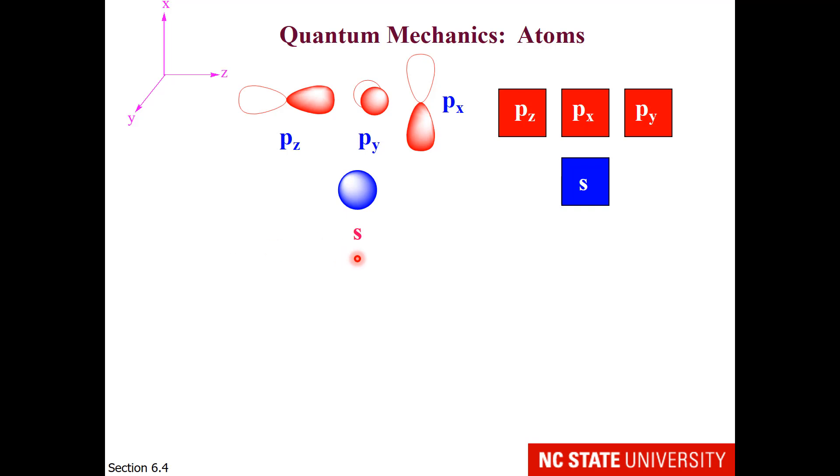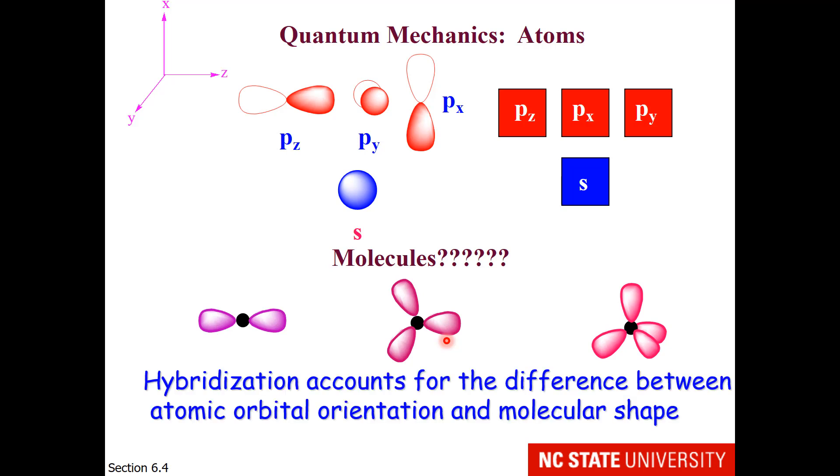Atoms by themselves have s and p orbitals and d orbitals and f orbitals. But molecules have bond angles that are 180 degrees, 120 degrees, or 109 degrees apart. So how does one get from the individual atom to the atom's behavior in molecules? And the answer is hybridization. Hybridization is a theory that accounts for the difference between atomic orbital orientation and molecular shape.